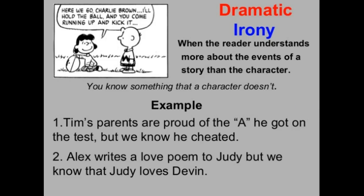Dramatic irony is when you have a greater understanding of something than the characters themselves — you're privy to information that the characters don't know. The example is Charlie Brown: "I'll hold the ball and you come running up and kick it." But we know that Lucy is going to pull the ball out from under Charlie Brown, and he never ever gets to kick the ball. She promises every time, and he never gets to kick it.